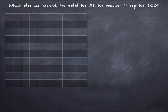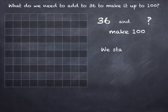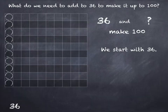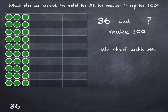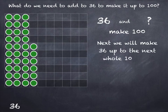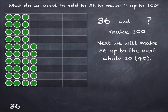What do we need to add to 36 to make it up to 100? 36 and what is 100? We start with 36 — 3 tens and 6 units — and then we'll make 36 up to the next whole 10, which in this case is 40. So what do we have to add on to 36 to get to 40? You can use your number bonds to 10 to help you with this one.